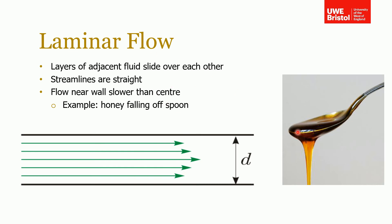This ordered, regular nature is a characteristic of laminar flow. A good example is the image on the right-hand side showing honey falling off a spoon. Honey is quite a viscous fluid — we'll talk about viscosity later in this lecture. The streamlines in the honey are nicely ordered, moving quite slowly and relatively to each other, displaying these laminar flow characteristics.